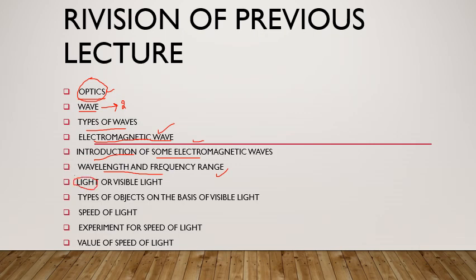پھر ہم نے detail میں light کو discuss کیا تھا جو ہمارا main topic ہے — visible light۔ Light کی basis پر objects کو different types میں divide کیا: کچھ objects heat up کرنے پر glow کرتے ہیں، کچھ cool condition میں glow کرتے ہیں۔ ان کے نام — luminescence، incandescent وغیرہ — اور ان processes کے نام بھی discuss کیے تھے۔